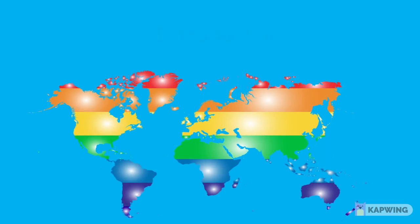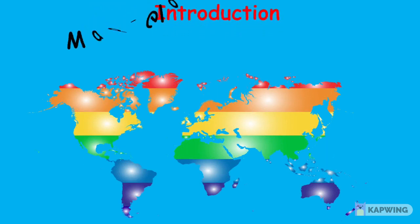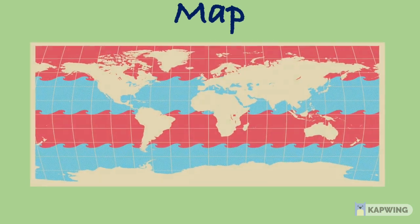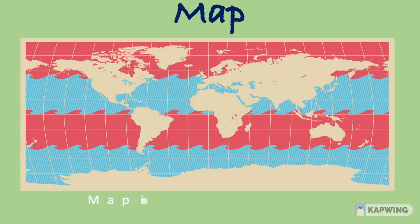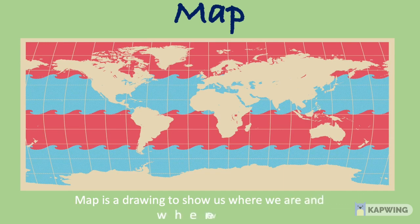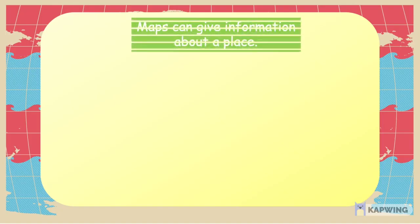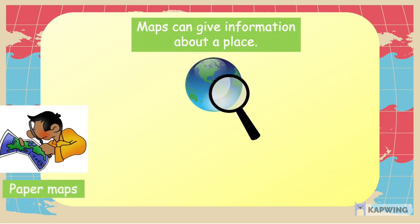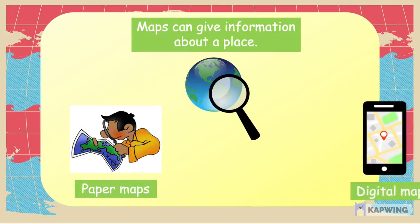Hello Kids! In this video, let's have an introduction to Map, Globe and Digital Map. Have you ever used a map before? A map is a drawing to show us where we are and where we need to go. Maps can give information about a place. They can be paper maps or digital maps.